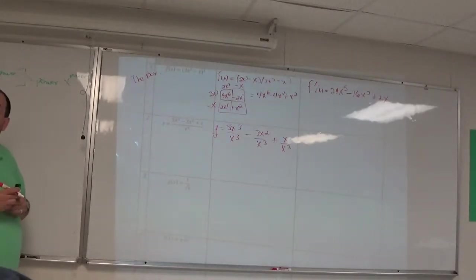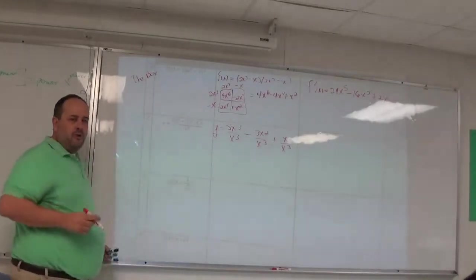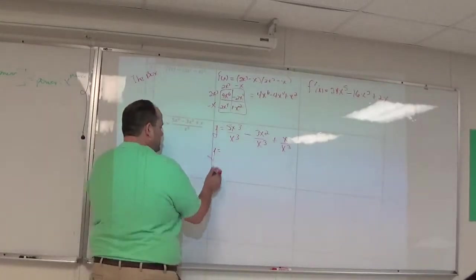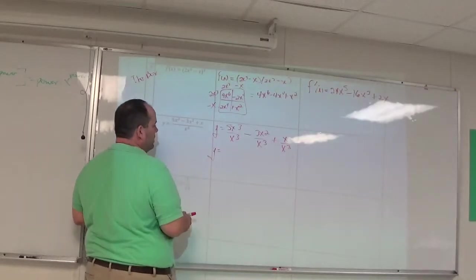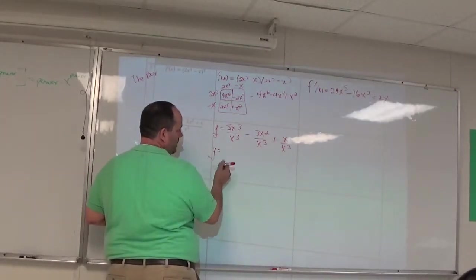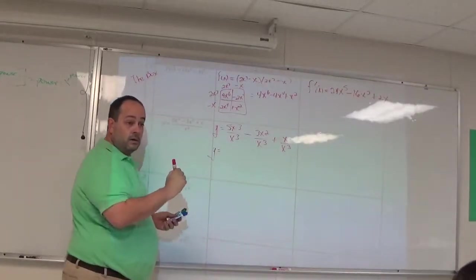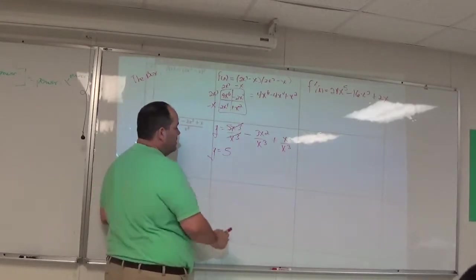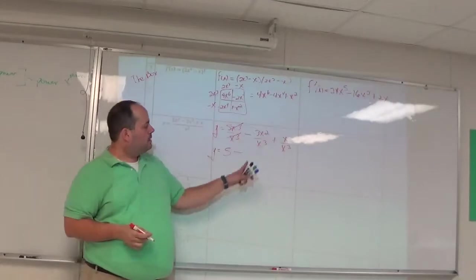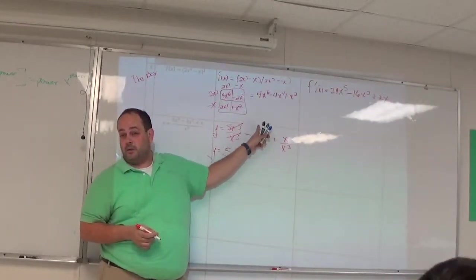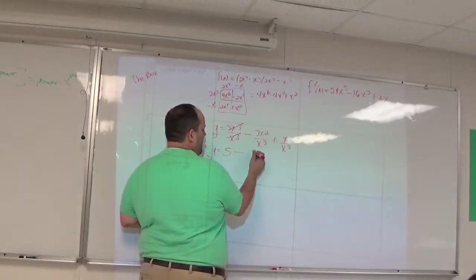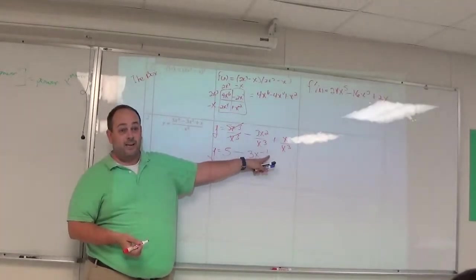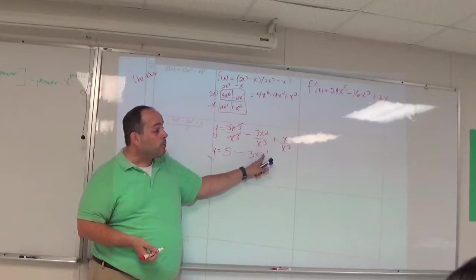What can you do now that you couldn't do before? Now can you cancel off here? Yeah, tell me about this cancellation. 5x³ divided by x³ is just going to be 5. Minus this next guy, 3x² divided by x³. Depending on how you want to say this, you could say 3 divided by x or 3x to the negative 1. The nice thing is now it's a power rule ready problem.